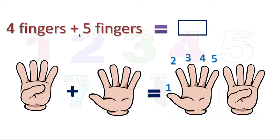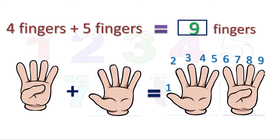Now here we are going to add 4 more fingers. We will take the next number — count in the forward direction for 4 fingers. After 5 comes 6, then 7, 8, and 9. All together there are 9 fingers. We counted in the forward direction to get our answer.